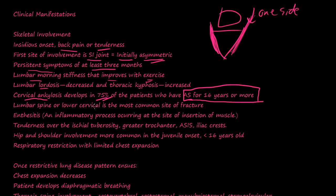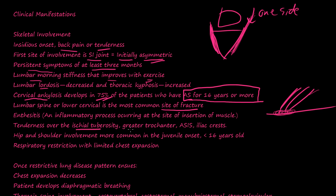The lumbar spine or lower cervical is the most common site of fracture. Enthesitis is an inflammation process that occurs at the site of insertion of muscles — where the tendon inserts into bone, you get inflammation of those insertions. That's called enthesitis or enthesopathy. Tenderness over the ischial tuberosity, greater trochanter, ASIS (anterior superior iliac spine), and the iliac crest.